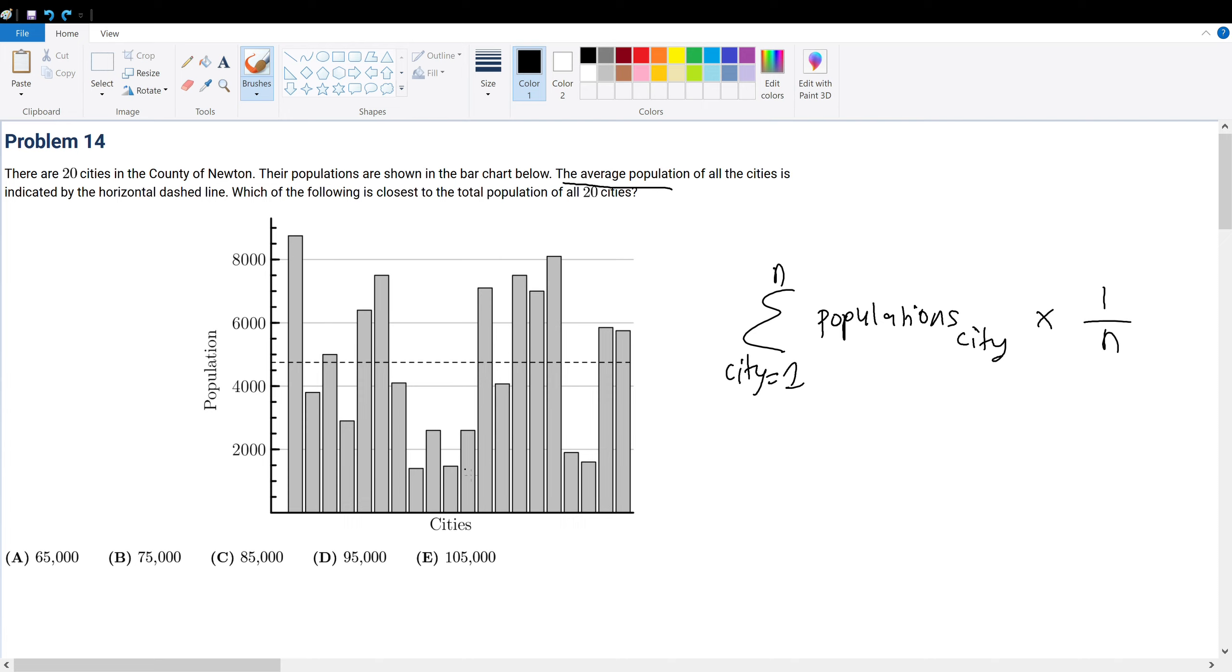From this expression, how do we solve this question? We know there are 20 cities, so we have P1 plus P2 plus P3 all the way to P20. We have 20 cities with 20 individual populations, and we divide this by 20. This average gives us the dashed line.